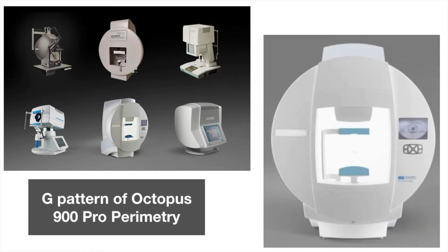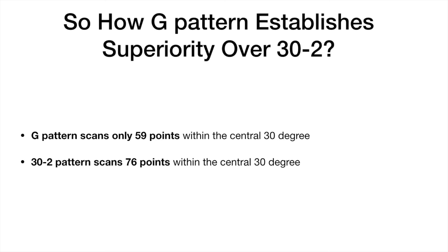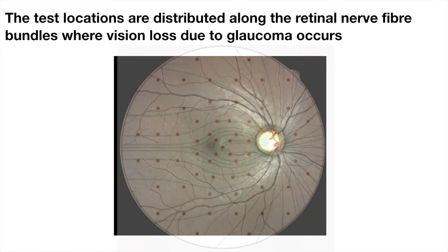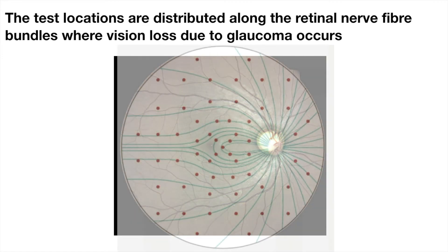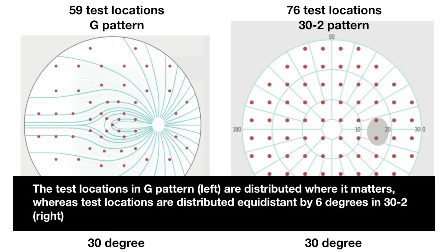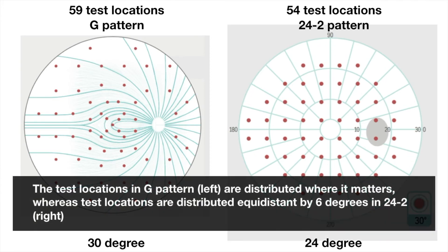G-pattern of Octopus scans only 59 points, whereas the 30-2 pattern scans 76 points within 30 degrees. So how is G-pattern superior? G-pattern test locations are distributed along the retinal nerve fibre bundles where vision loss due to glaucoma occurs, seen on the left side, whereas on the right side the 30-2 and 24-2 pattern points are distributed equidistant by 6 degrees.